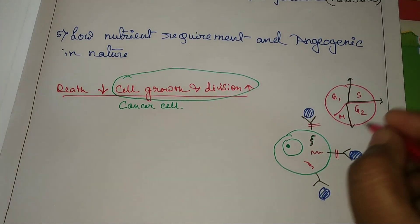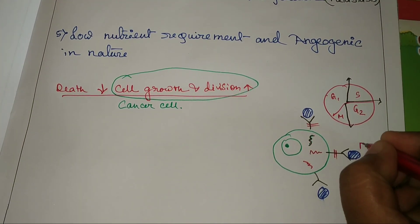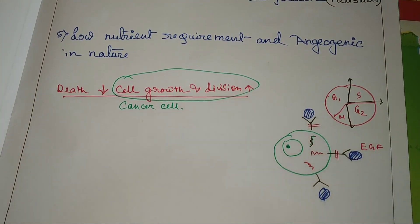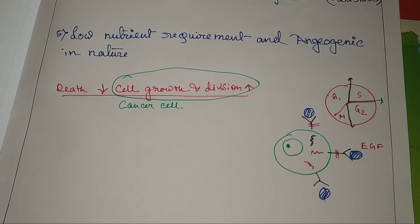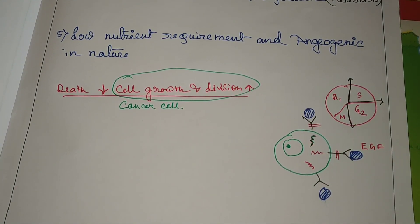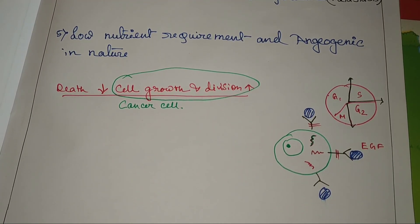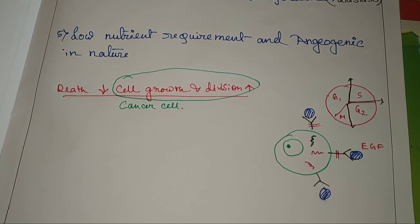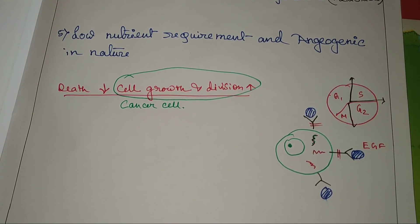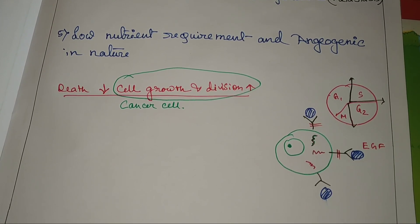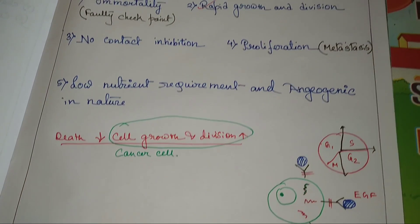If we consider this receptor known as EGF — Epidermal Growth Factor — when they bind with the receptor, they produce a signal telling the nucleus to prepare itself for the next division. Then the cell will divide. This is another factor of cell growth and division.